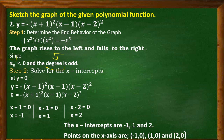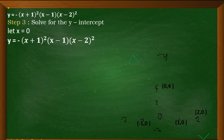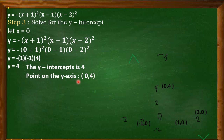Next, solve for the y-intercept by letting x = 0: −(0 + 1)²(0 − 1)(0 − 2)² = −(1)(−1)(4) = 4. So our y-intercept is 4, and the corresponding point on the y-axis is (0, 4).